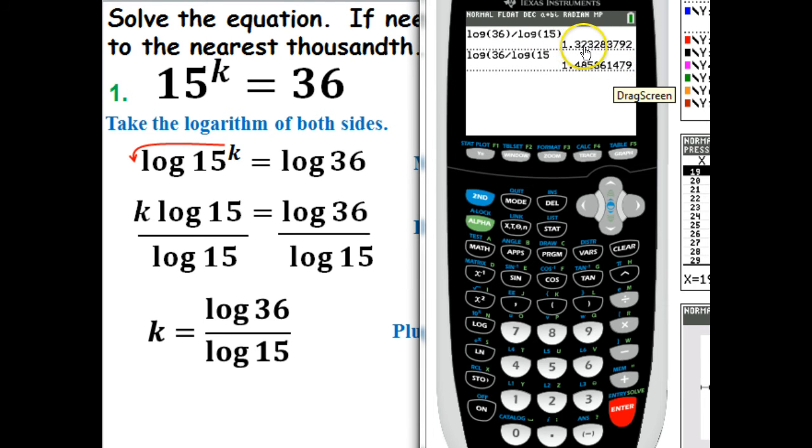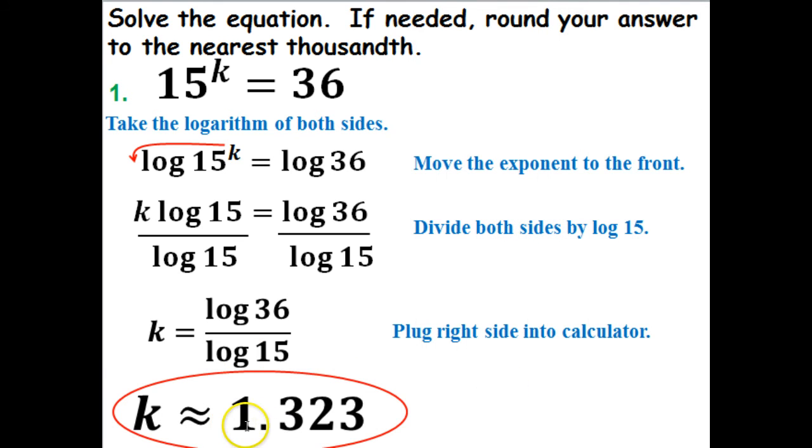But it should be this 1.32328 on down the line. So now we're going to, which will give us our answer 1.323. That is rounded to the nearest thousandth. That's three decimal places.